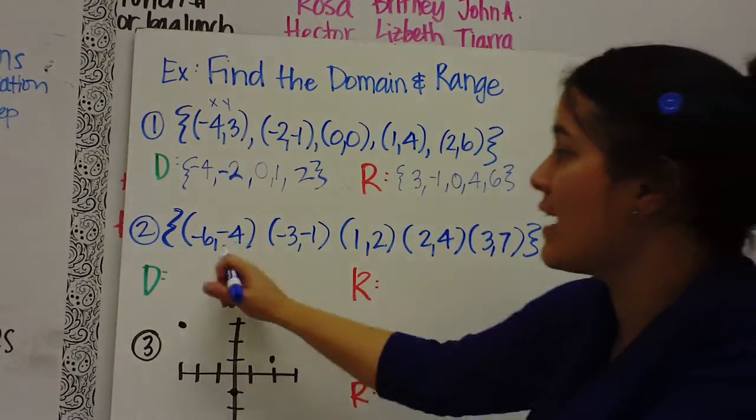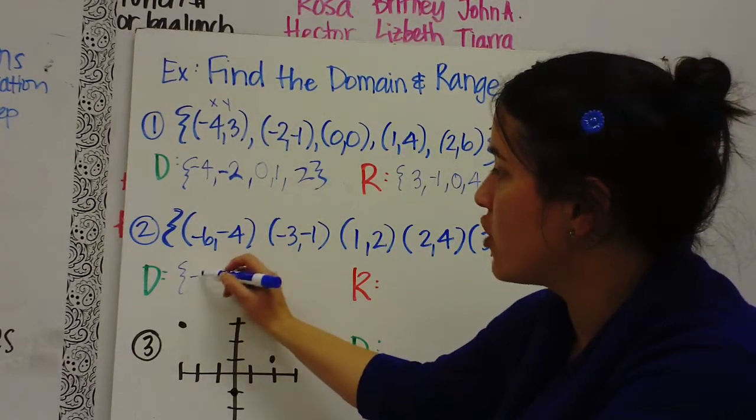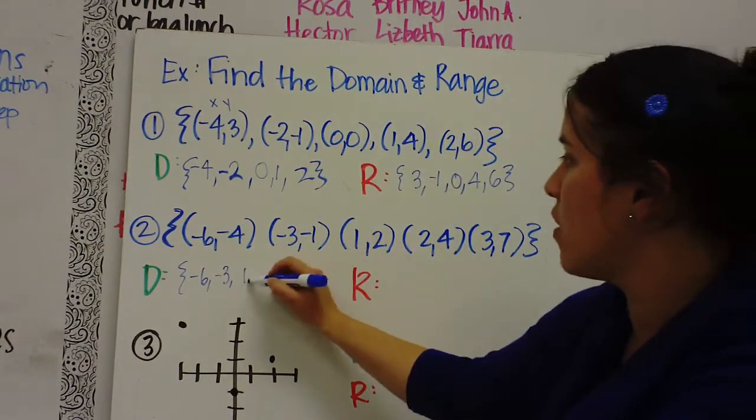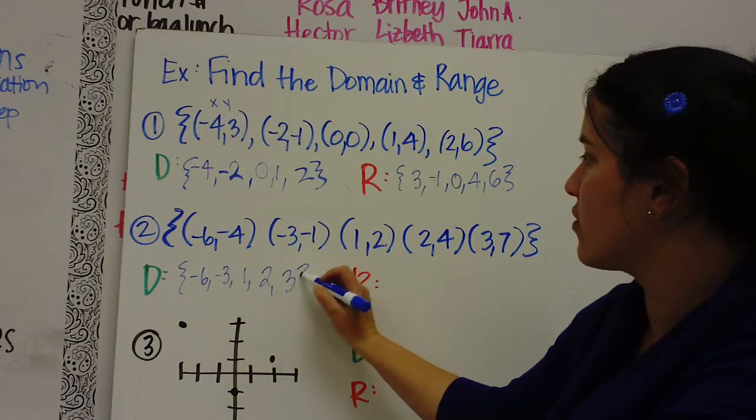So for the second one, number 2, the domain are your beginning, the first values. They're X values, negative 6, negative 3, 1, 2, and 3.